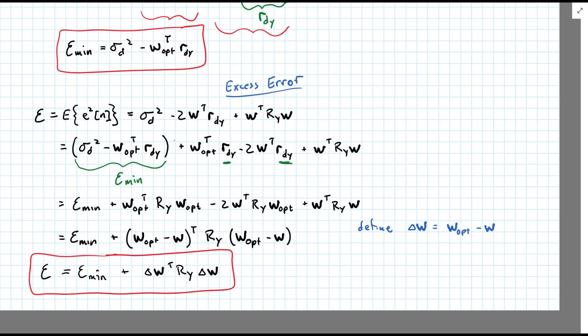And the error increases quadratically as we move away from our optimal solution with our delta W's. And the other thing is, up above, our minimum error solution did not depend on, directly, on R_y. But here it does. So R_y determines how quickly the error grows as we move away.